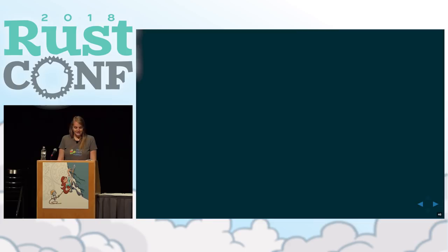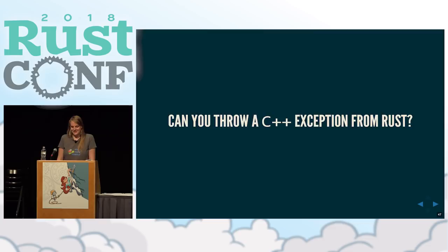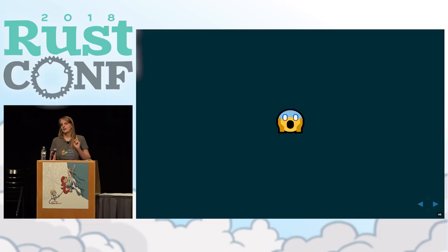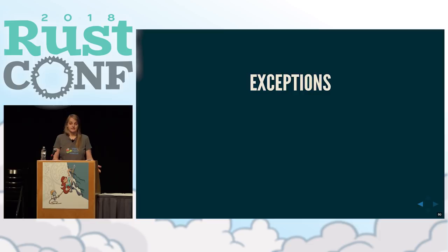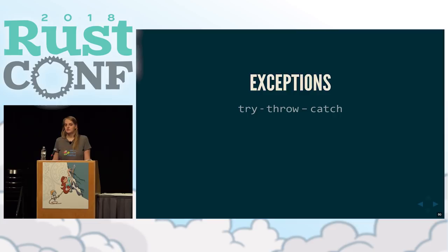So I have five minutes left, and I hope I've shown you some useful information and where the ecosystem needs more work. For the last five minutes I want to answer a question that has been haunting me for the last six months. This is based on the C++ LLVM documentation, which is really great — if you're curious about this, definitely read it. There are usually three keywords involved in exceptions, sometimes four.